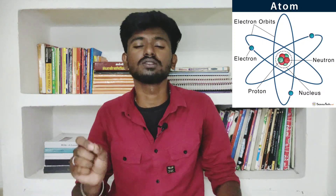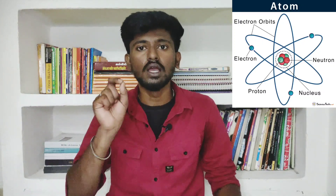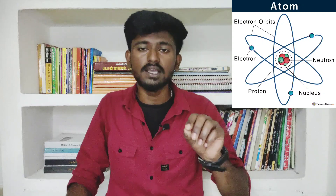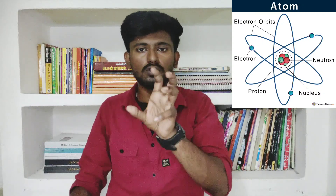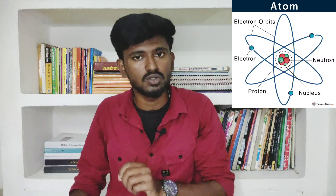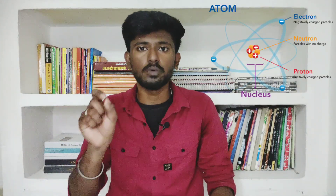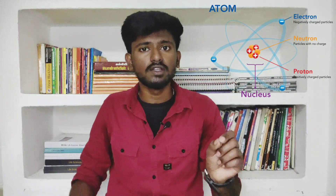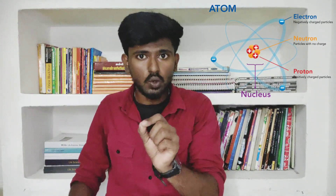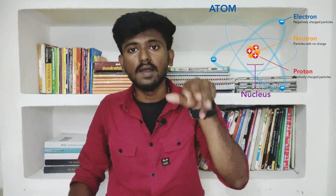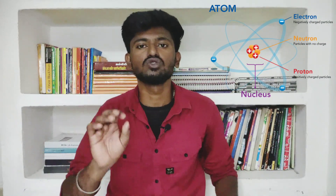In the atom, there is a nucleus. Inside the nucleus, there are protons and neutrons. There are also electrons in the atom. Proton carries a positive charge, neutron has no charge — it is neutral, and electron carries a negative charge.